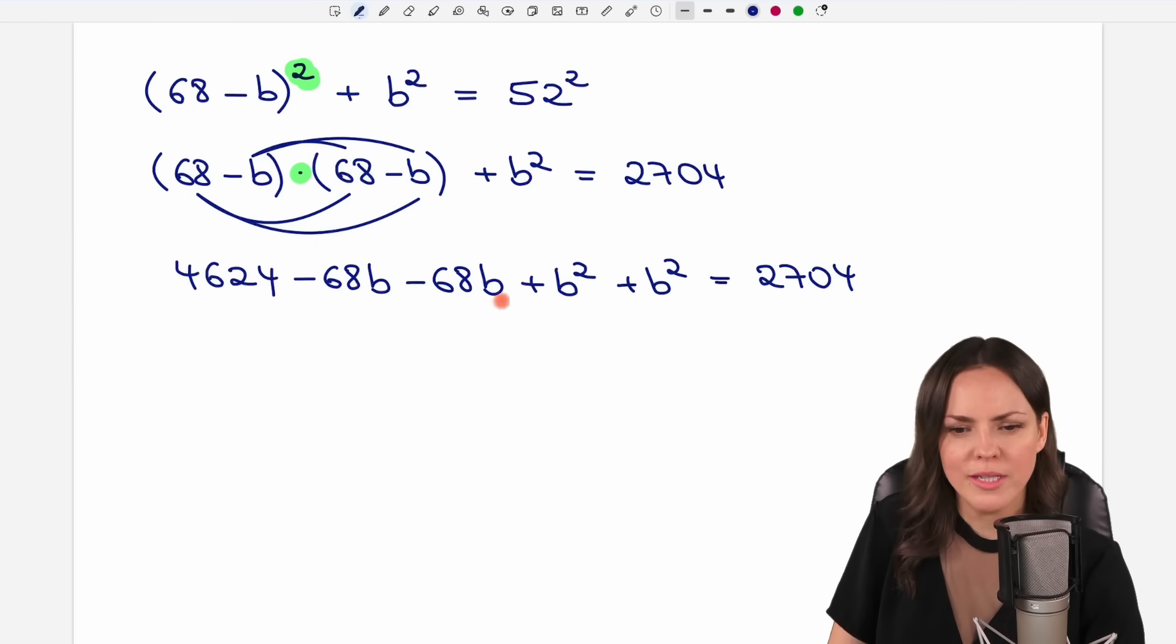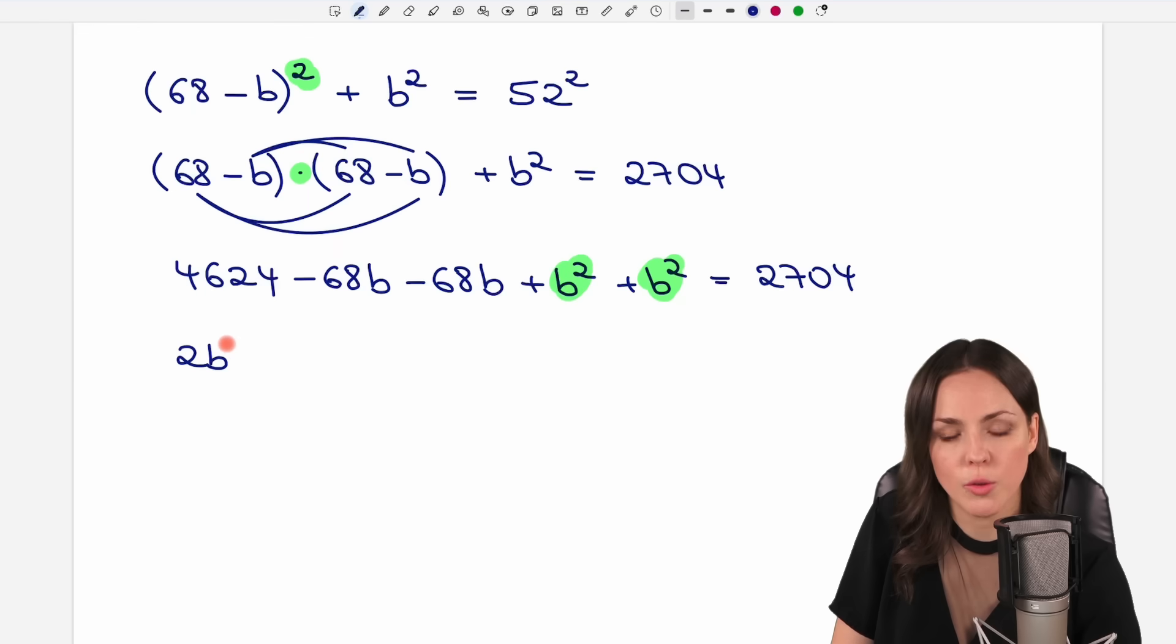Okay, maybe we simplify the left side a little bit. Let's start with the B squared parts here. We have one B squared plus another one, which gives us 2B squared. Then the parts with B, so negative 68 of these, minus 68 of these gives us negative 136 of these Bs. And then plus the 4624. And on the other side, we still have our number.